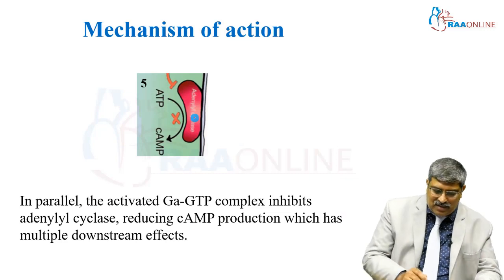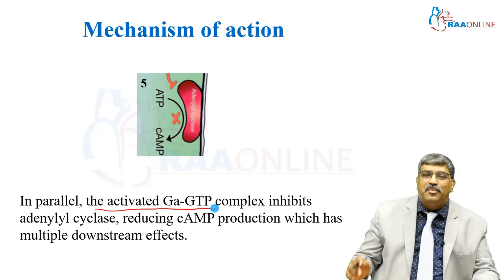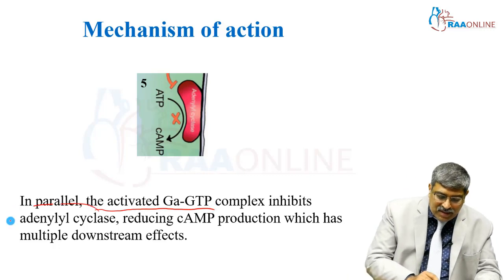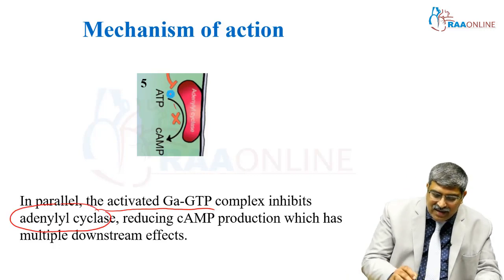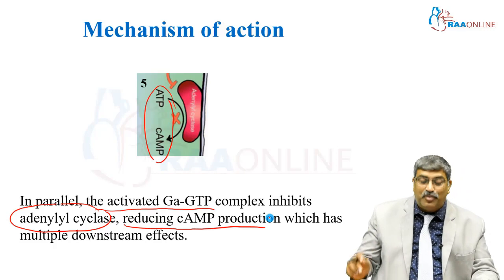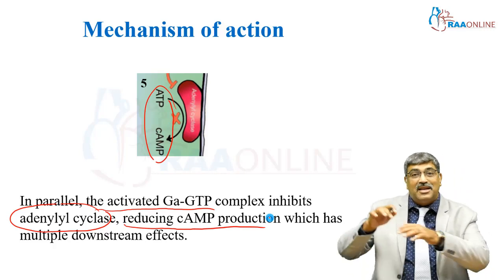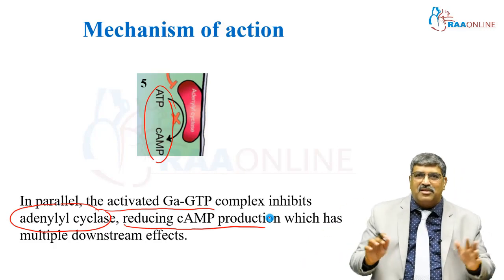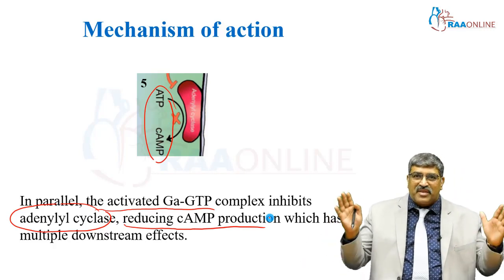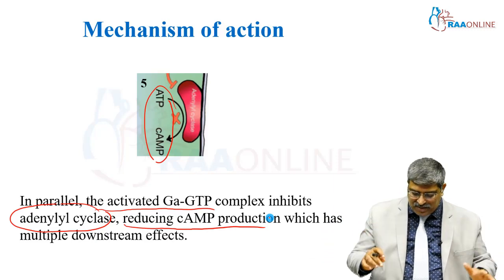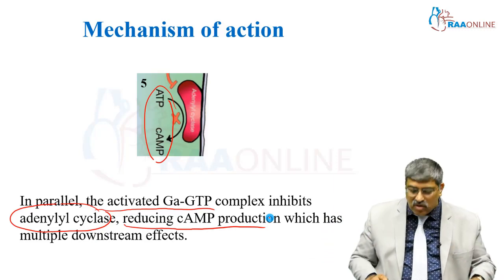In parallel, the activated G protein-GTP complex also inhibits adenylyl cyclase, thereby reducing cAMP production, which has multiple downstream effects. This is how stimulation of the alpha-2 receptor works at the cellular level.